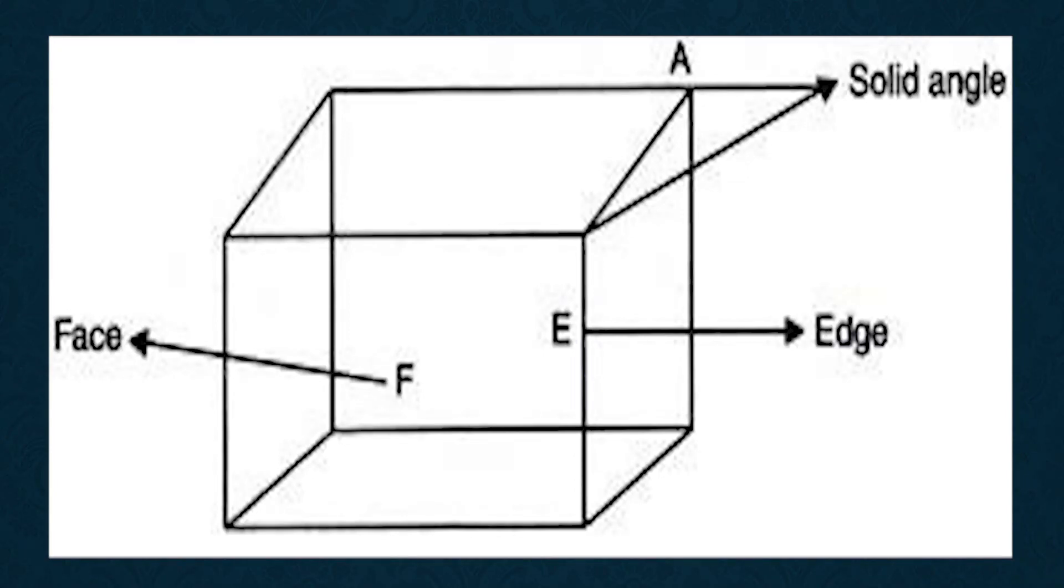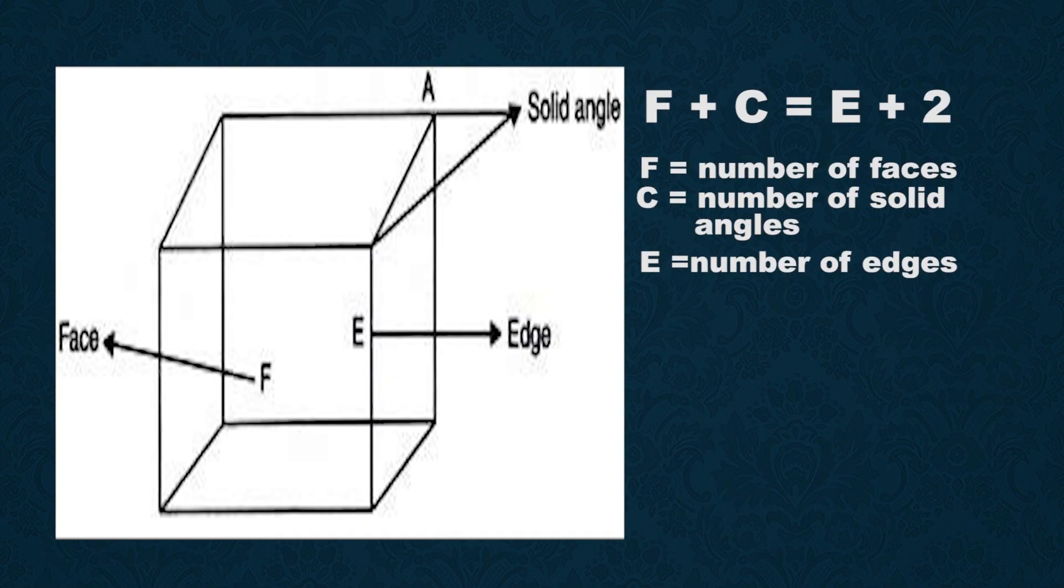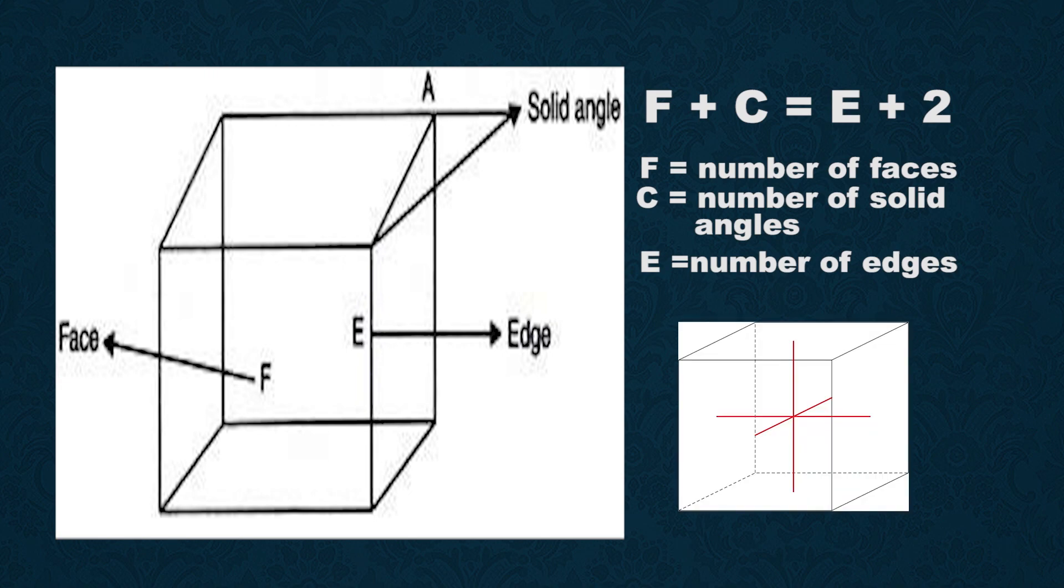When three or more faces intersect on a crystal, the result is a solid angle or vertex. The relationship between these elements in a crystal can be expressed by the formula F + C = E + 2, where F is the number of faces, C is the number of solid angles, and E is the number of edges. One should apply this formula on a cube to see how these characteristics are related.